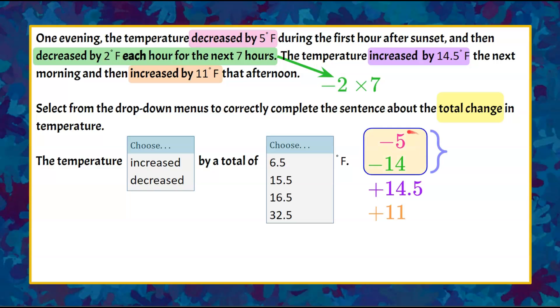I'm going to group them and add my negative values. Negative 5 and negative 14 are negative 19. When they have the same sign, you just add the values, add the absolute values, and keep the sign. Same thing here—these are both positive values, so we're going to add these two numbers together, and that will be a positive amount of change. 14.5 plus 11 is 25.5, and that's positive.